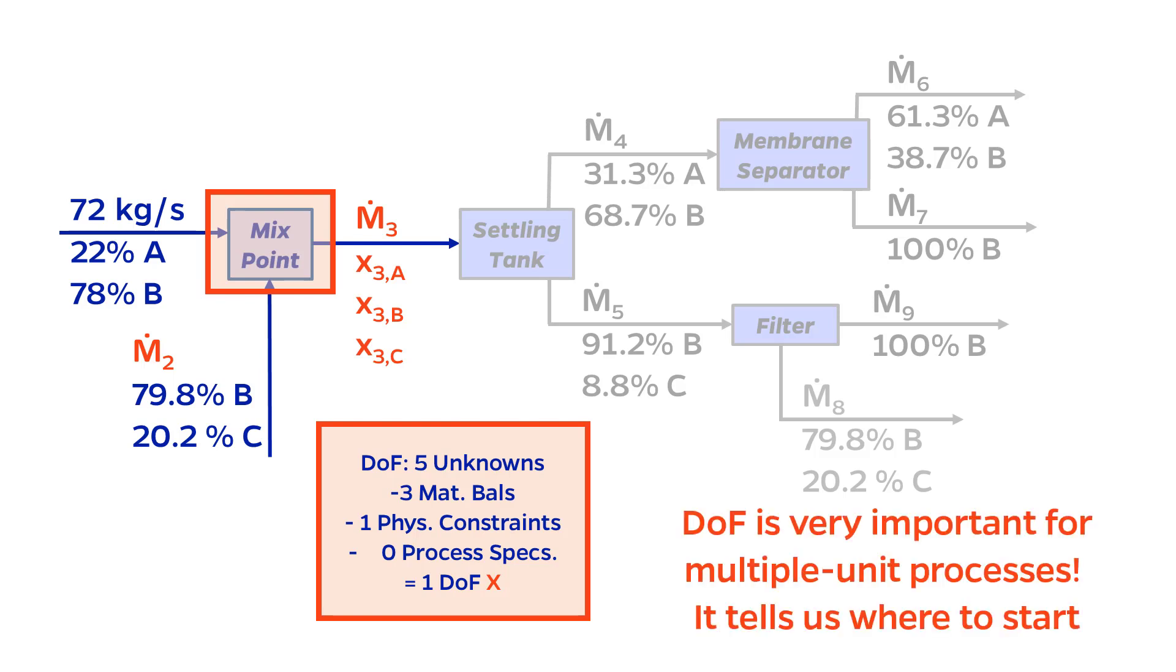This is where doing a degree of freedom analysis really starts to become important. If I hadn't done one, I might have tried to solve the three material balances in the physical constraint, and I would have gotten stuck. But just because this subunit is underspecified doesn't mean that the whole problem is doomed. I have to keep trying other subunits.